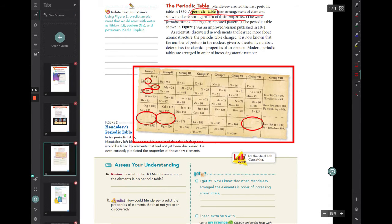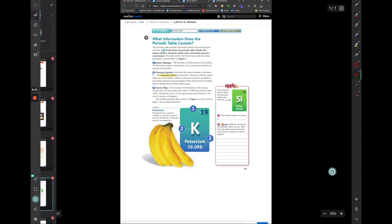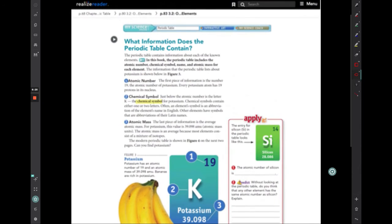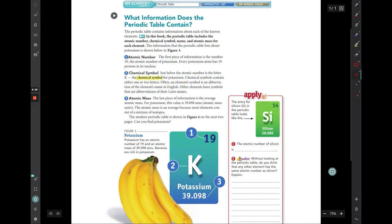So based on what he found and what he was seeing as far as patterns, he actually predicted that elements would be found in the future that would fall into these categories and complete the periodic table as we know it. Let's look at some of the important information that is found on the periodic table. Now tomorrow we're going to delve more into the periodic table and start looking at things specifically. But let's just look at sort of three real important things as far as the periodic table goes.